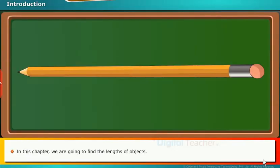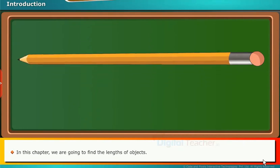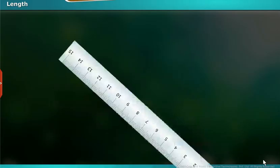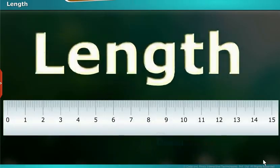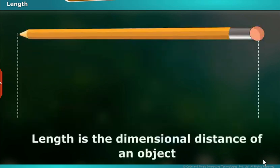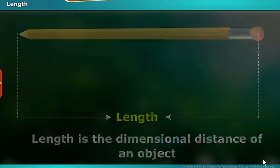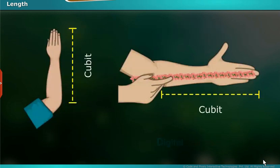In this chapter, we are going to find the lengths of objects. Let us know how to find the length of an object using the free hand. Length is the dimensional distance of an object. Generally, smaller lengths can be measured in cubits.